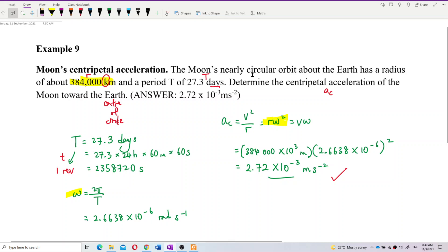Alright, very simple, yeah? Just use r omega squared. Omega is 2π over period.